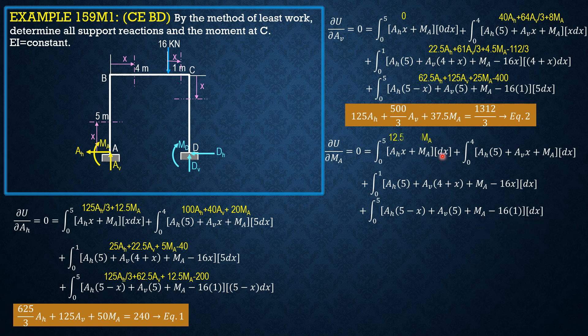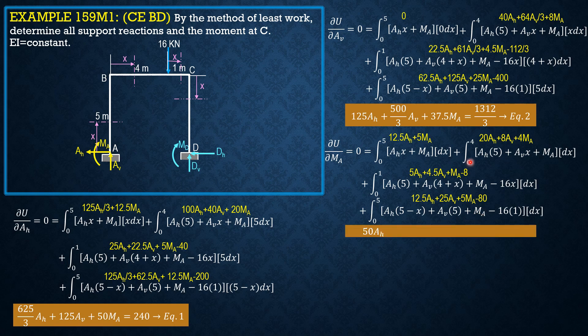Evaluating: the first integral gives 12.5Ah + 5Ma; the second gives 20Ah + 8Av + 4Ma; the third gives 5Ah + 4.5Av + Ma − 8; and the last gives 12.5Ah + 25Av + 5Ma − 80. Combining like terms gives the third and final equation: 50Ah + 37.5Av + 15Ma = 88.